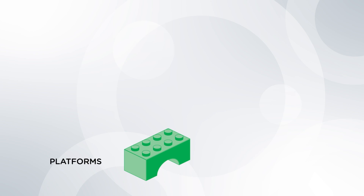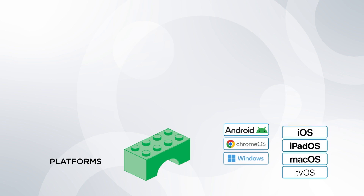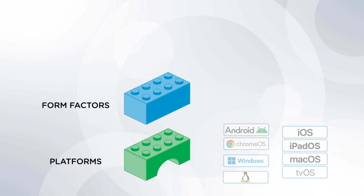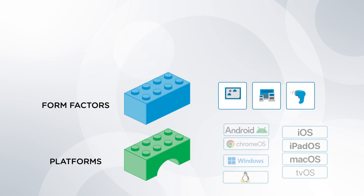There are three elements. Number one is the platforms supported with SOTI MobiControl — Google, Apple, Windows, and Linux — and the versions of these platforms will also determine what features are available. Number two is Form Factor, which is the hardware that makes up those devices: digital signage, tablets, scanners, or laptops — all of which will have different things you can configure and different features you can enable.